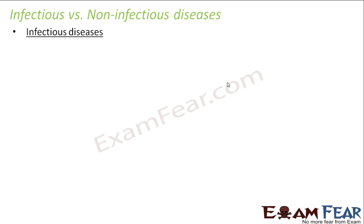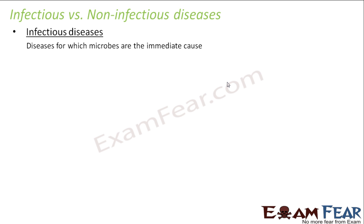First, we will discuss infectious diseases. Diseases for which microbes are the immediate cause. Microbes are nothing but microorganisms - organisms which are small enough that they cannot be seen with the naked eye. The diseases for which microbes are the immediate cause, meaning the first cause responsible for the disease, include bacteria, fungi, viruses, protozoa, or some small worms.